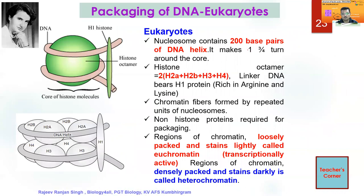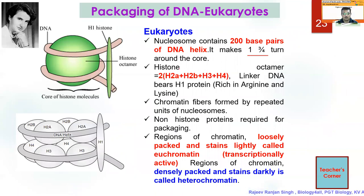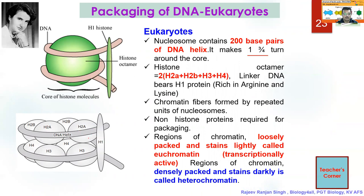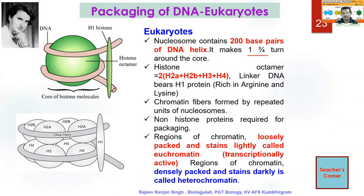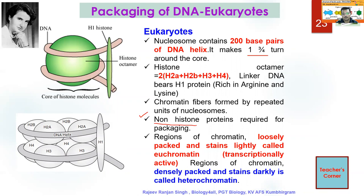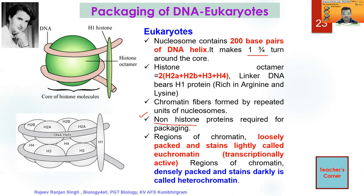Nucleosome contains 200 base pairs of DNA helix and makes around one and three-quarter turns. The histone octamer consists of eight histone proteins: two copies each of H2A, H2B, H3, and H4. The two nucleosome beads are connected by another histone, H1. So chromatin fibers are formed by repeated units of nucleosomes. You should also understand that there are some non-histone chromosomal proteins required — called NHC proteins — for additional packaging of the nucleic acid.